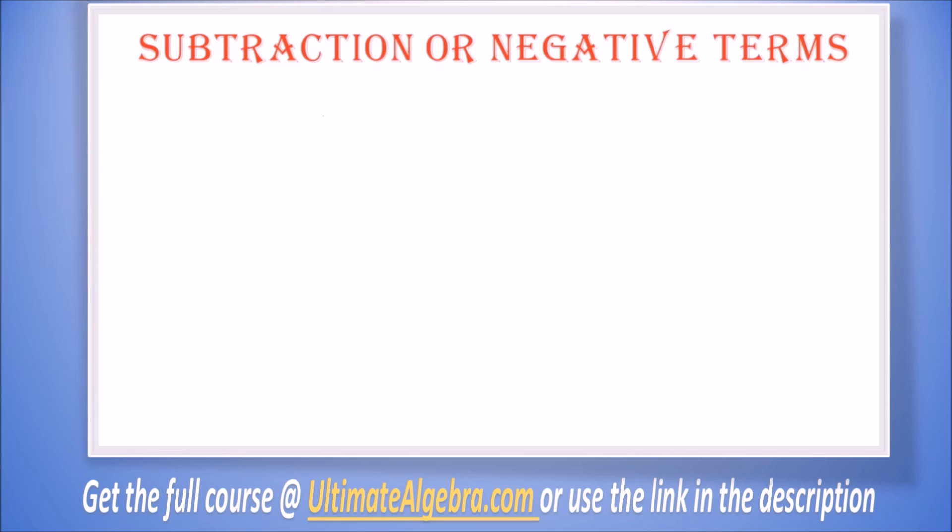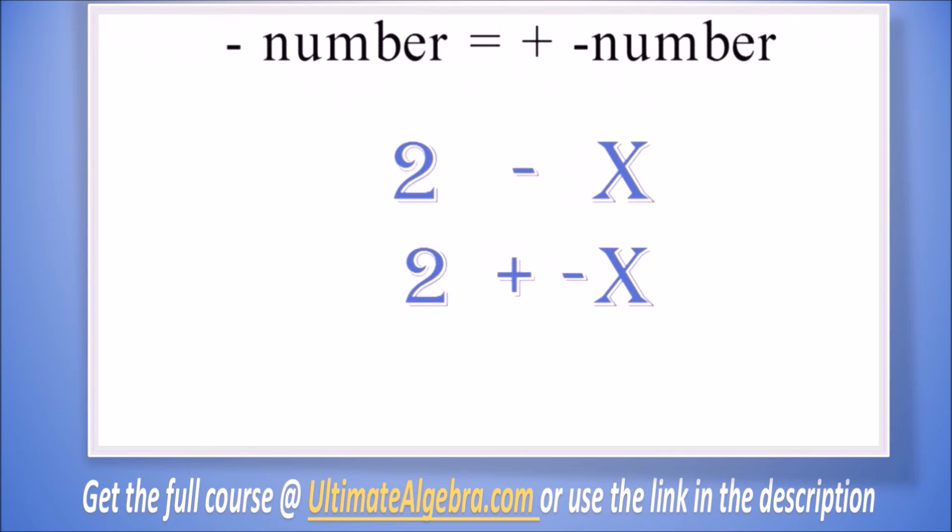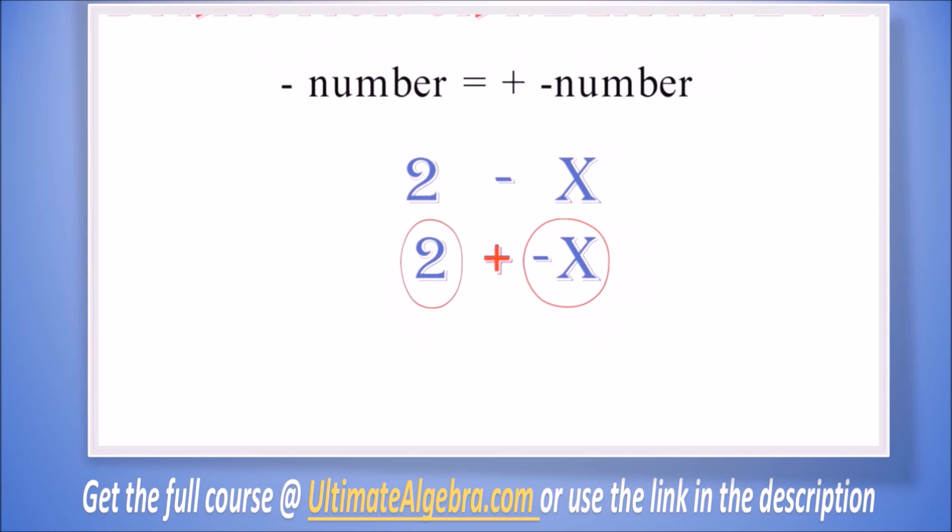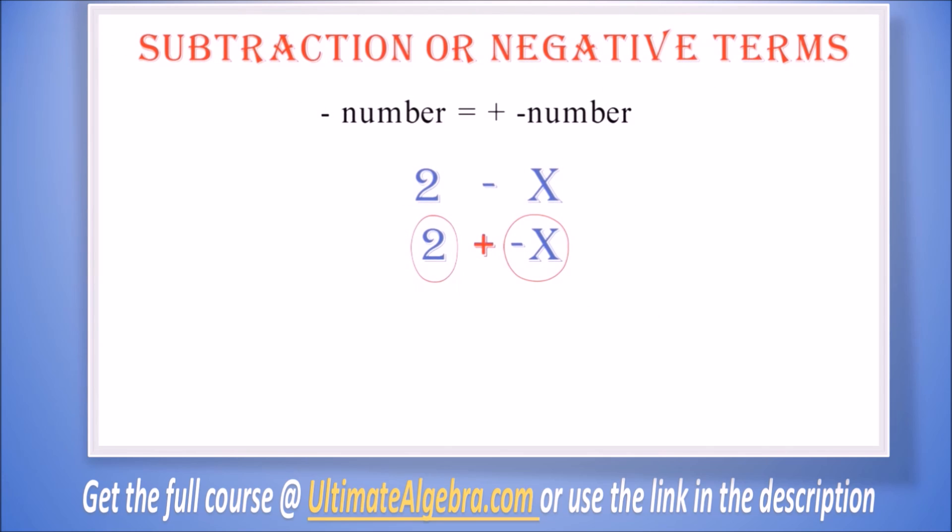This definition is still true because the subtraction of a number can be defined as the addition of a negative number, such that 2 minus x can be written as 2 plus negative x. So here we can still say that the 2 is one term and the minus x is another term, and they are separated by a plus sign.